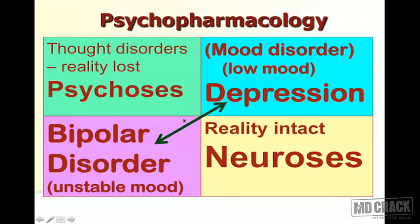There are two more boxes joined by an arrow because both are mood disorders. The upper box on the right says depression — that's depressive disorder or major depression. The arrow leads down to bipolar disorder, which is unstable mood. So the four boxes cover: psychosis, neurosis, depression, and bipolar disorder.